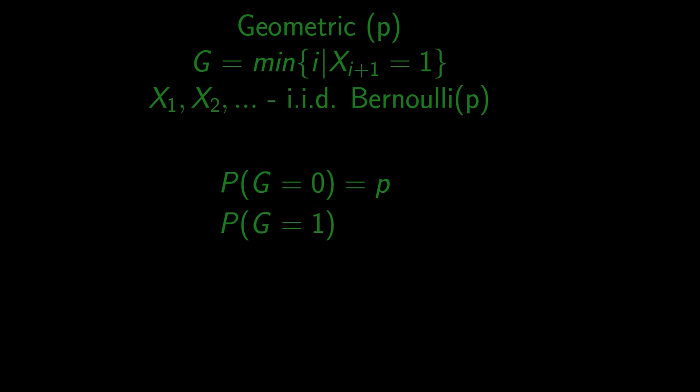Since these events are independent, the probability of them occurring together is the same as the product of probabilities. The probability that we succeed in the second trial is p, and the probability that we don't succeed in the first trial is 1-p or q.